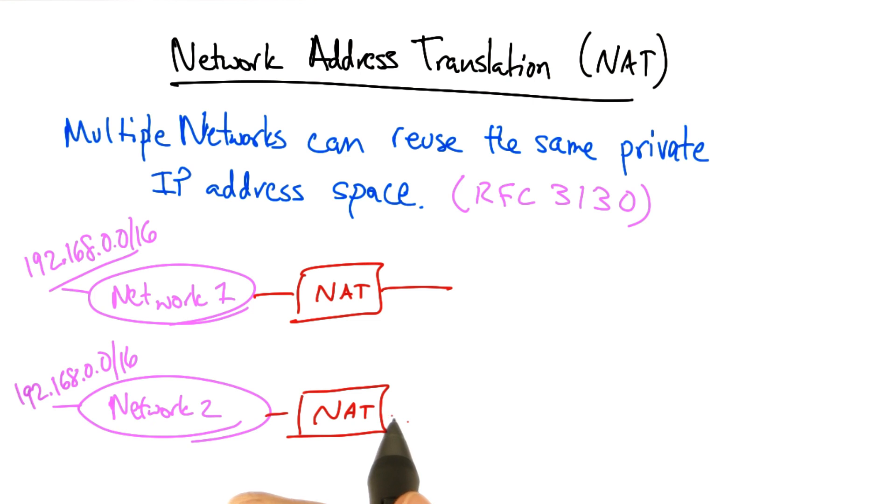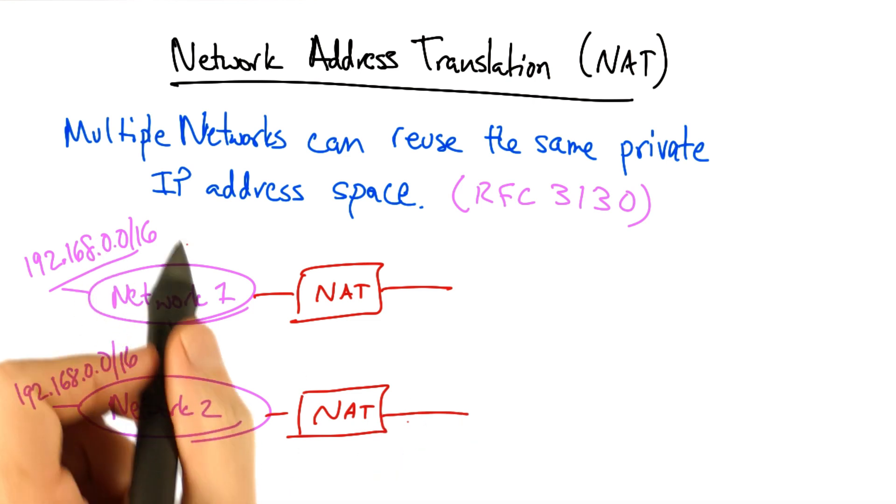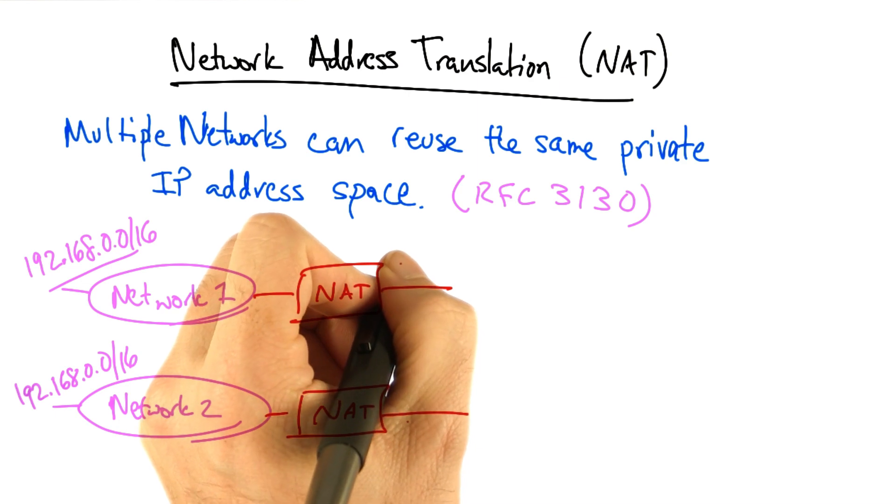What a NAT, or network address translator does, is take the private IP addresses that are behind the NAT and translate those IP addresses to a single globally visible IP address.